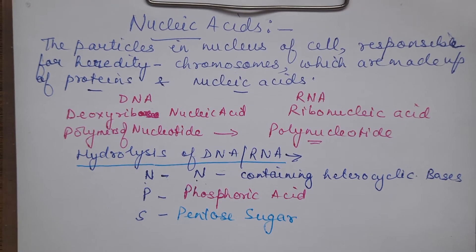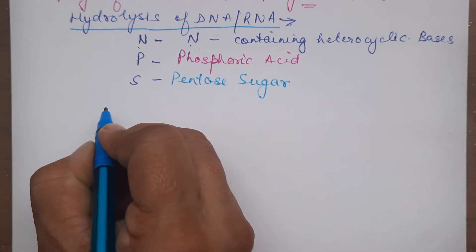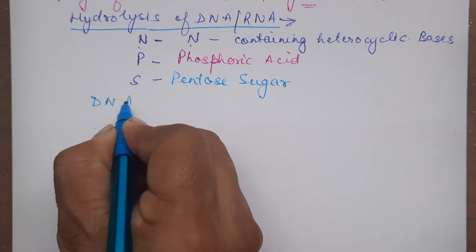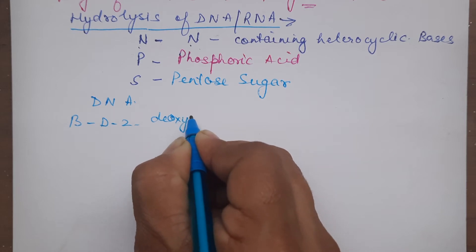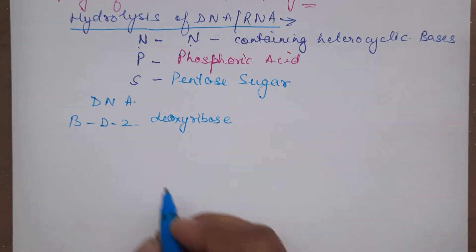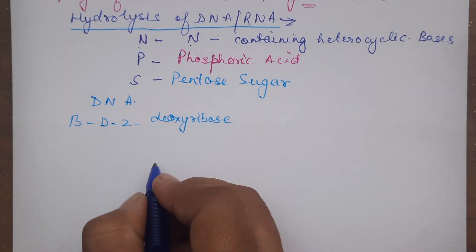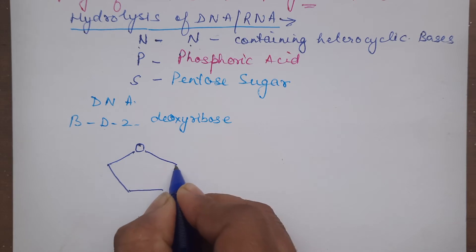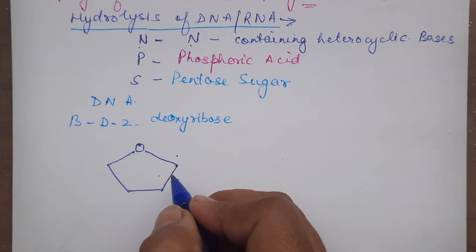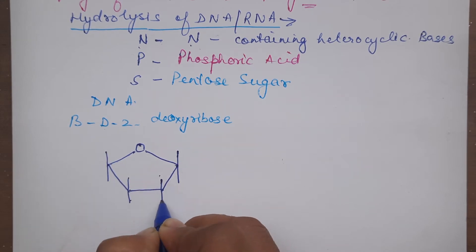Now let us study the sugar and how things are attached. What sugar is present in RNA and DNA? For DNA, it has beta-D-2-deoxyribose sugar. It is a pentose sugar, meaning five carbon atoms are there. You will draw a five-membered heterocyclic ring with oxygen in the center and complete the bonds.